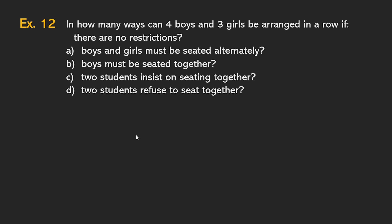Let's answer this. In how many ways can four boys and three girls be arranged in a row if there are no restrictions? If there will be no restrictions, it can be whatever. So it's like arranging seven students, because four plus three.